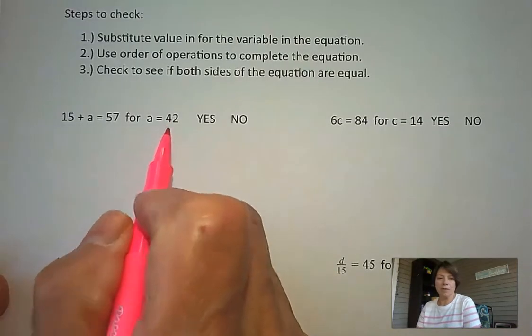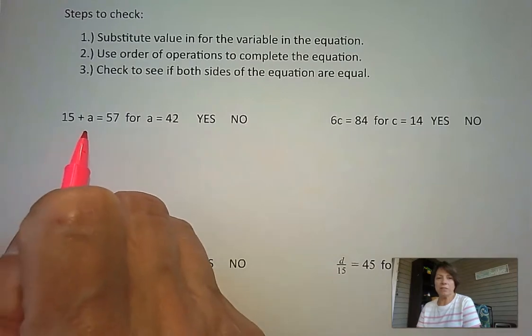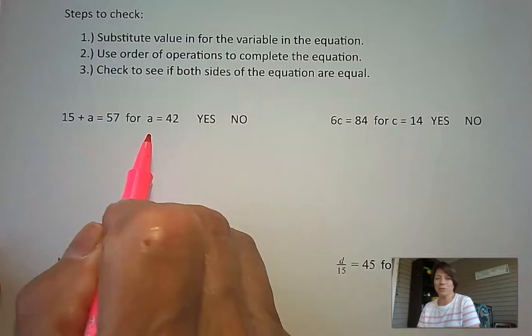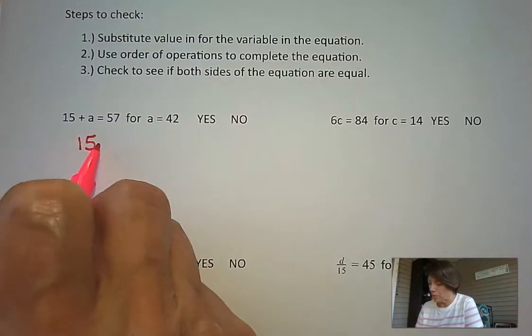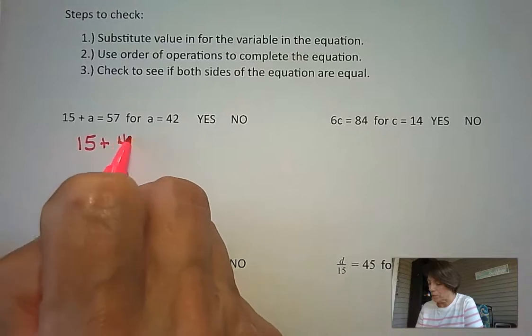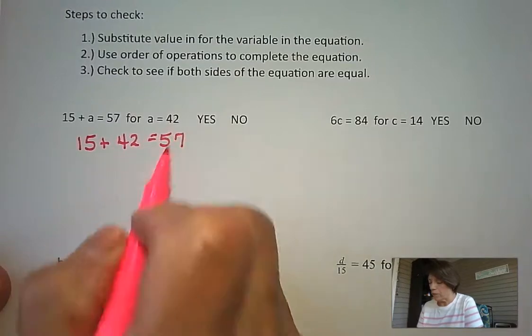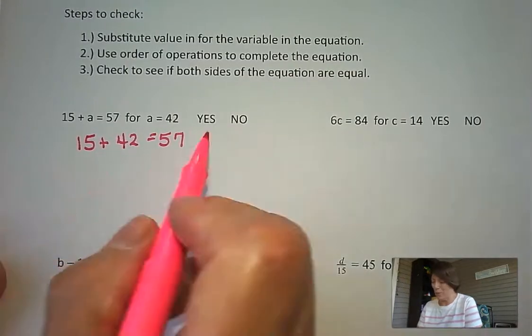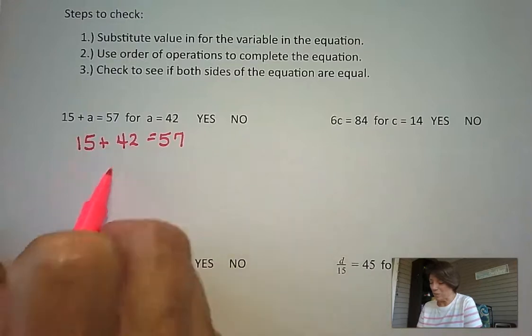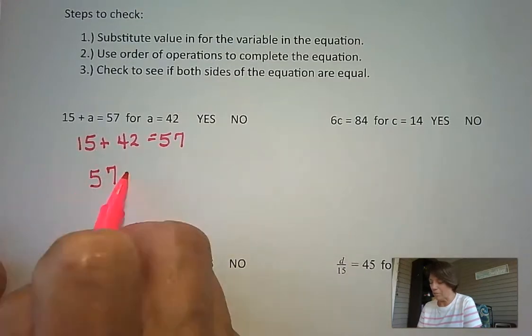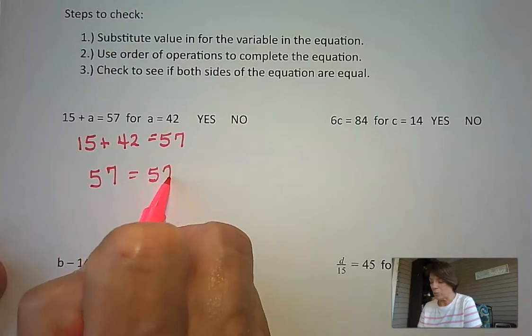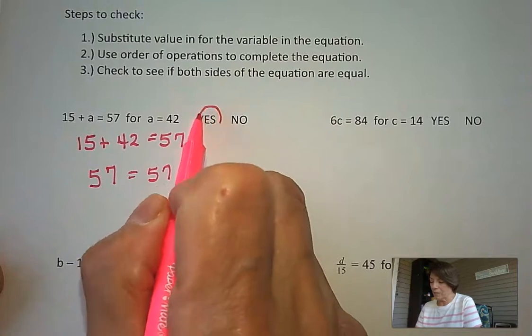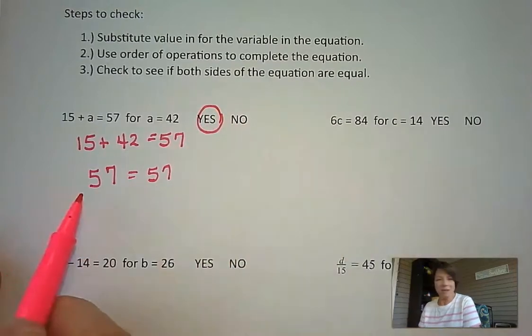Let's look at our first problem. It tells us to check 15 plus a equals 57 if we replace the a with a 42, if we substitute 42 in for the a. So 15 plus 42 equals 57. If we add 15 and 42, 5 plus 2 is 7 and 4 plus 1 is 5, we can see that they are equal. So both sides of this equation are equal, and so yes, 42 does make this equation true.